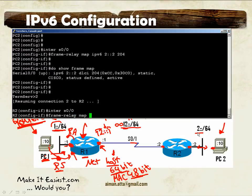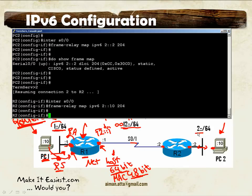Relay map by PV6, Let's move by AIDA. 2 column column 10. Show frame map.